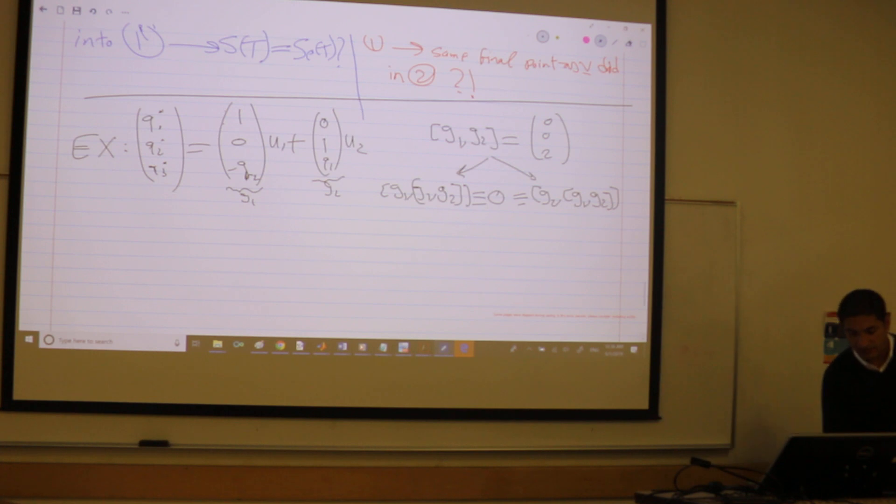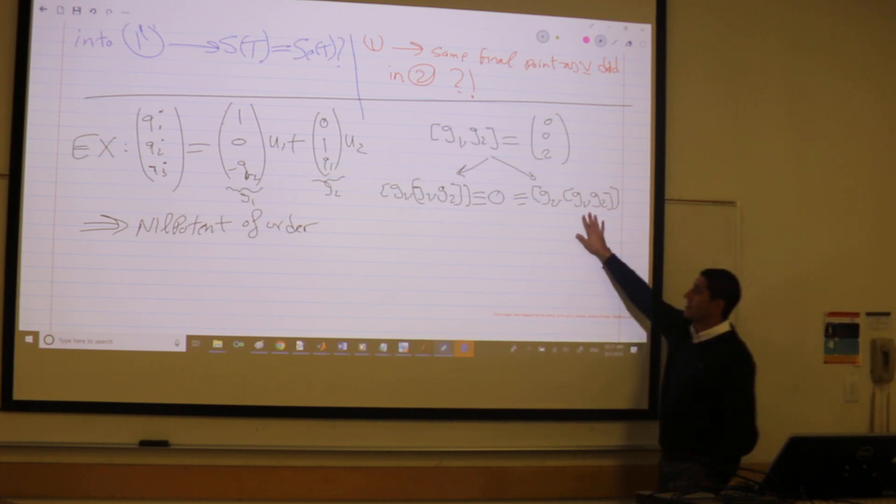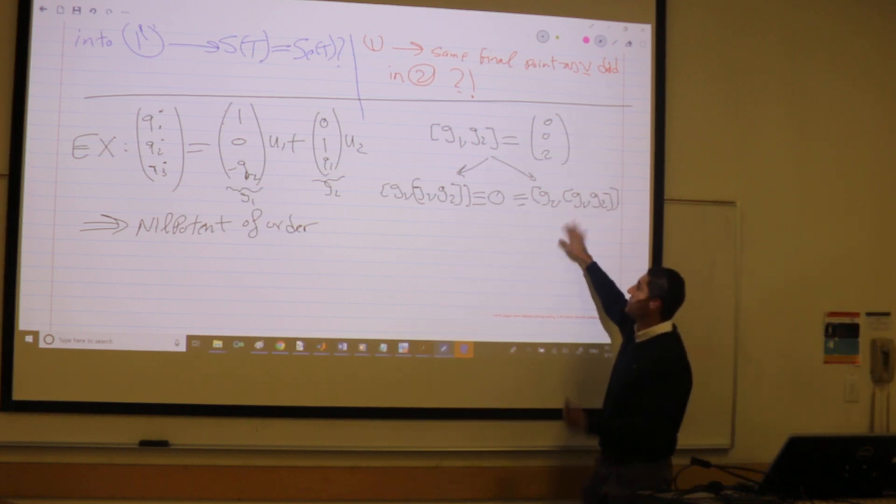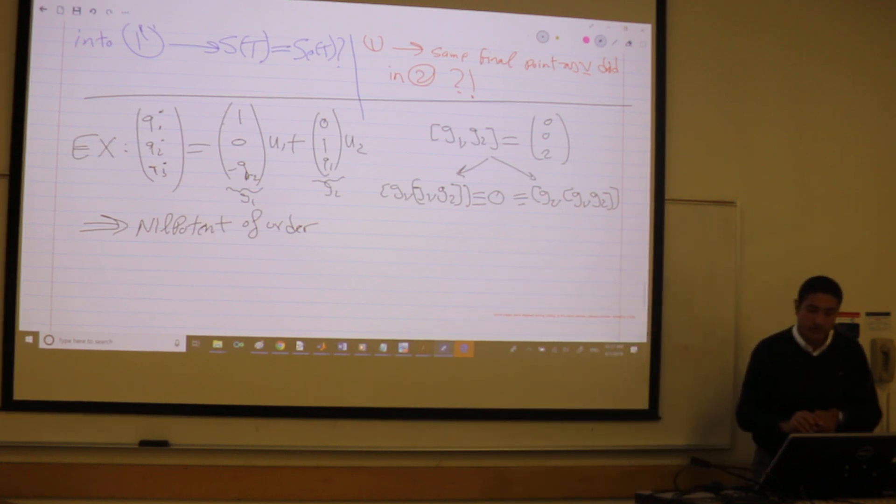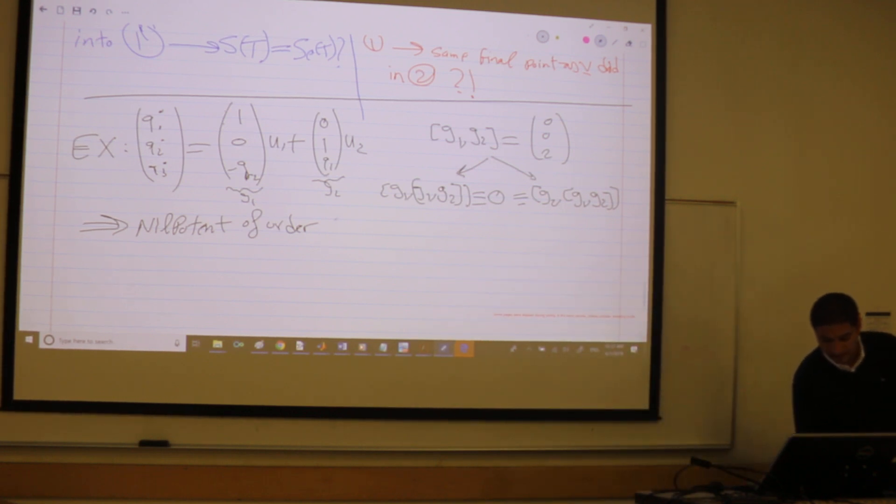So that's very good. Why? Because now, I'm nilpotent of order what? A Lie bracket containing three vector fields vanishes. So I'm nilpotent of order two. I'm allowing you up to two vector fields. I have K equals 2. I can get my bases.